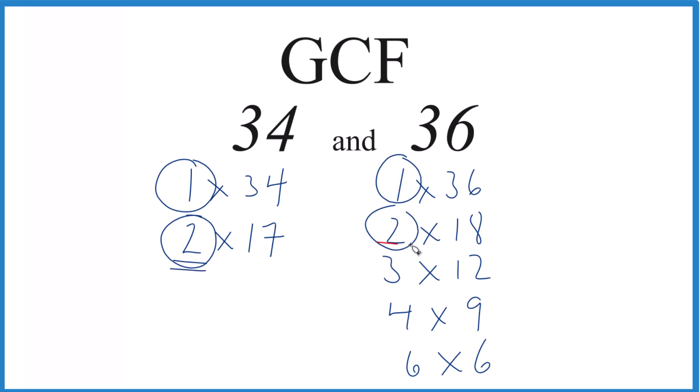So 2, that's the greatest common factor. In answer to our question, the GCF for 34 and 36 is 2.